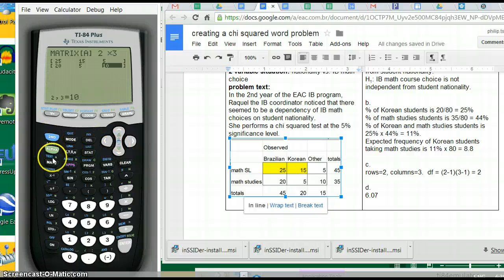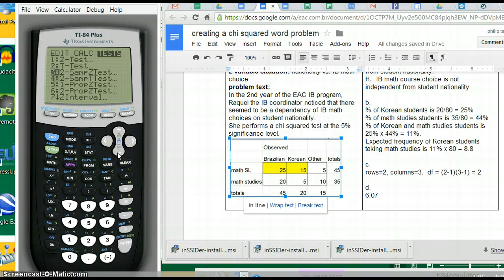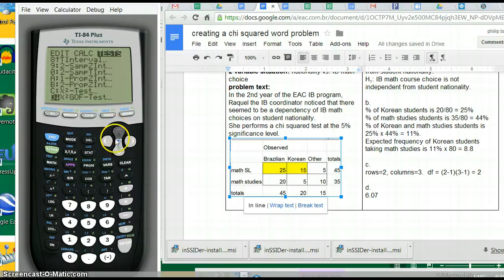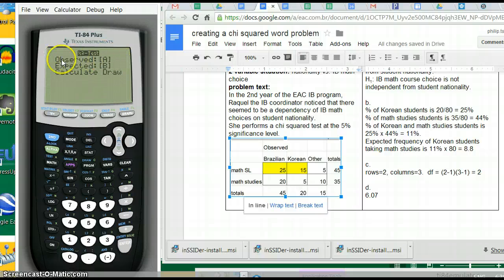Then we are going to run the chi-squared test. We go to stat tests and go to the C option, which is chi-squared test. It already has A as the observed table, which is what we're putting in. The expected table B is empty because this test will fill in the expected table. Then we go to Calculate. It gives us degrees of freedom of 2, which we've already found. It gives us a chi-squared value of 6.067 and a p-value of 0.0481.